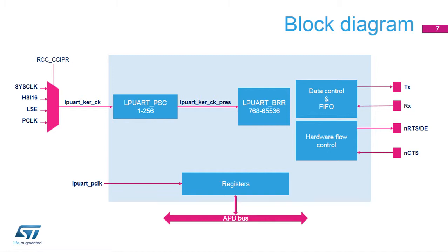TX and RX pins are used for data transmission and reception. NCTS and NRTS pins are used for RS-232 hardware flow control. The Driver Enable pin, or DE, which is available on the same I/O as NRTS, is used in RS-485 mode.